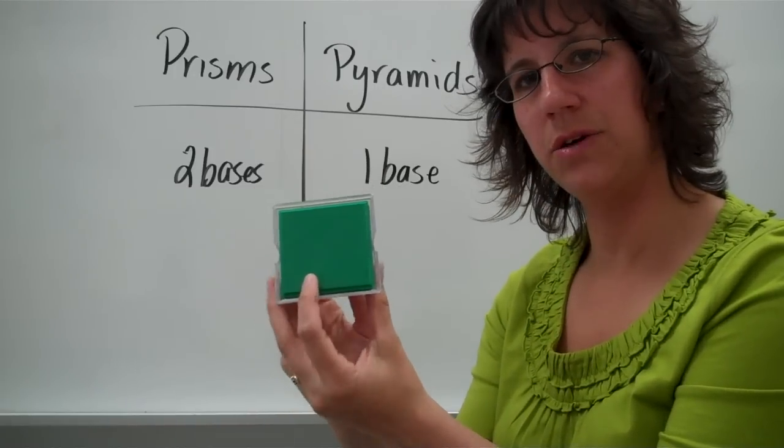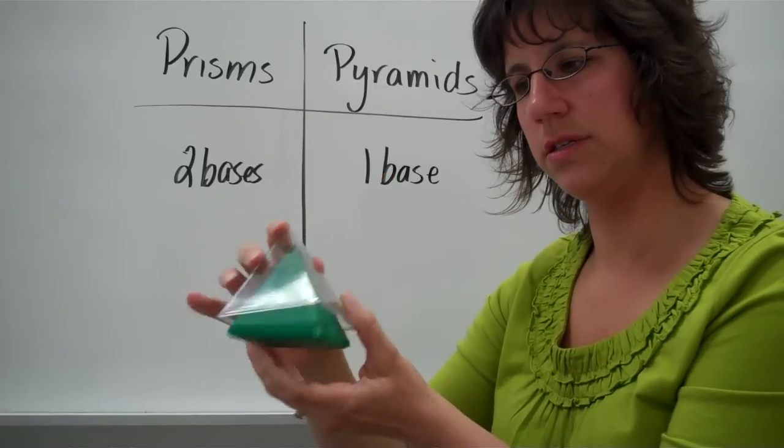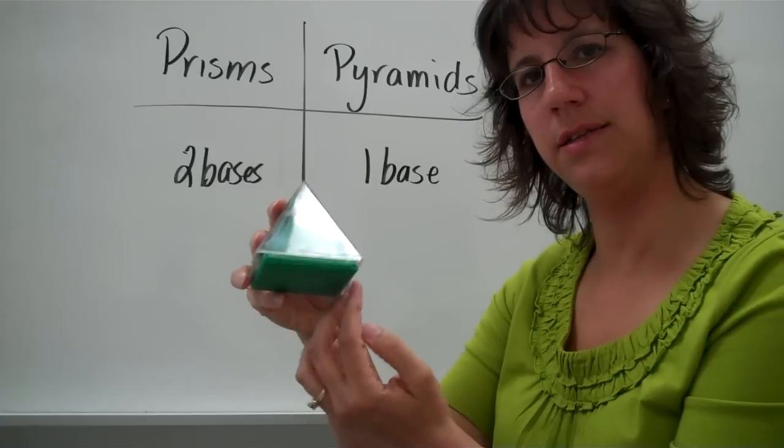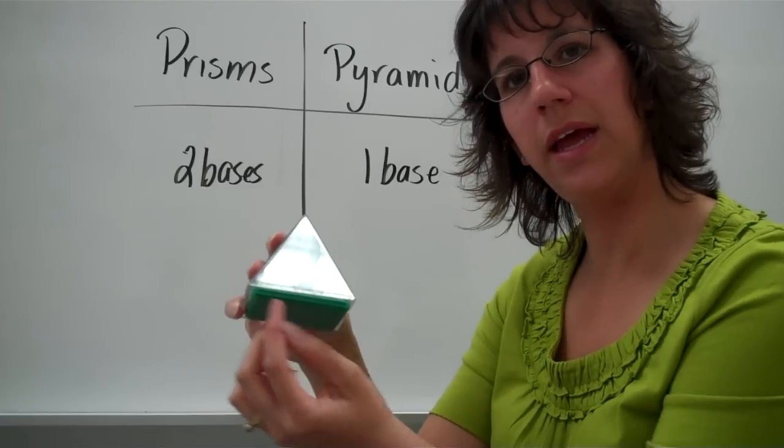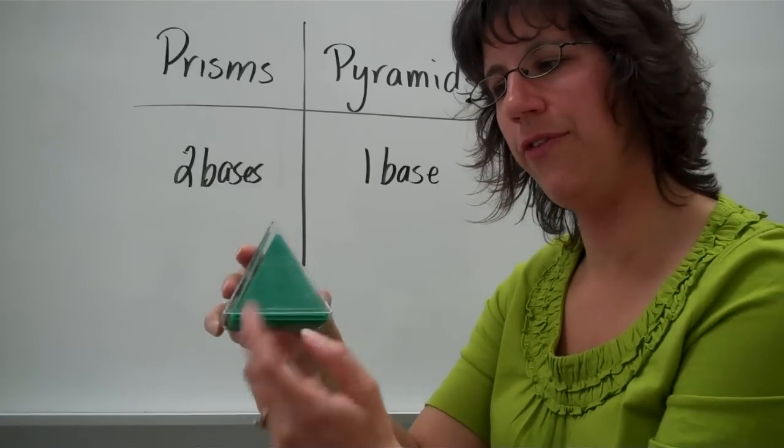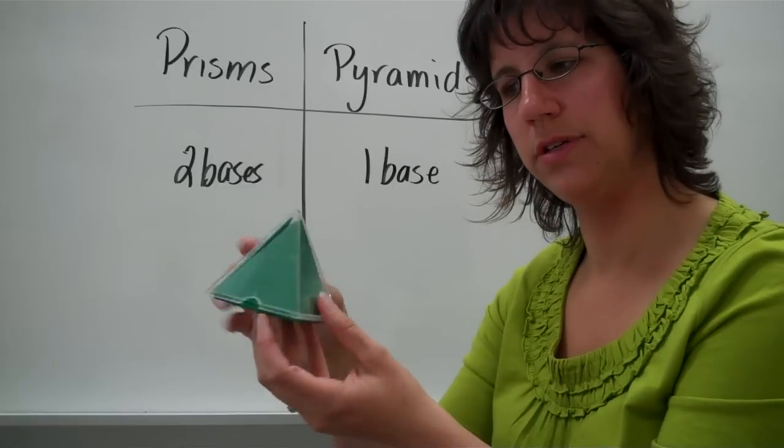A square pyramid because it has a square at the base. Now, because it has a square, you can tell how many triangles are going to be all the way around. Because the bottom is a square, and a square has four sides, you're going to have four triangles all the way around.